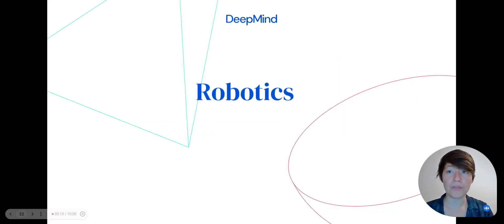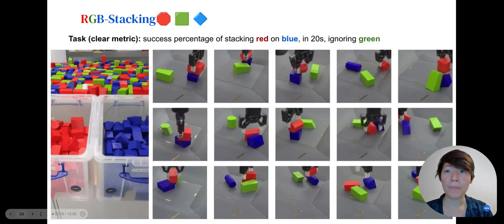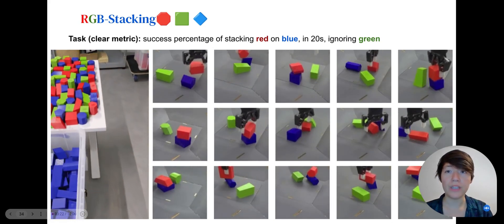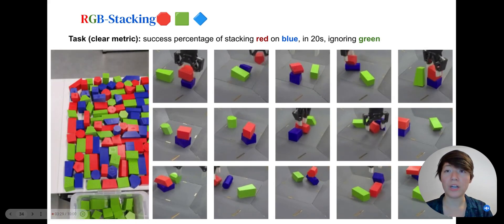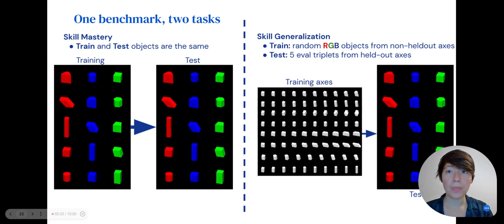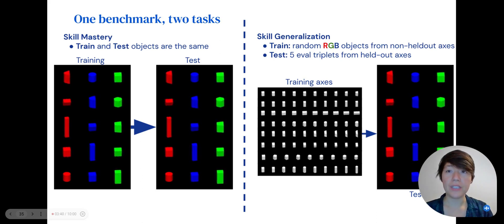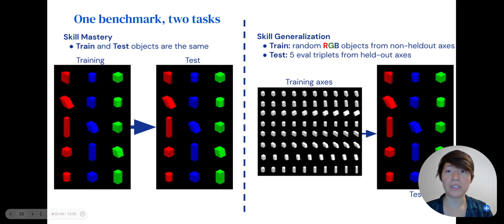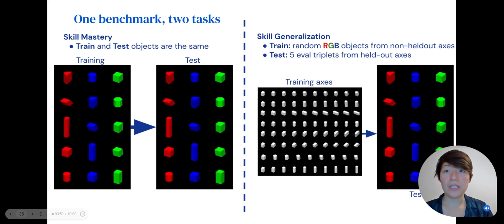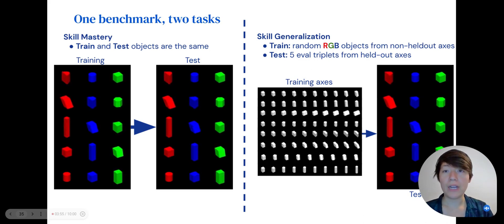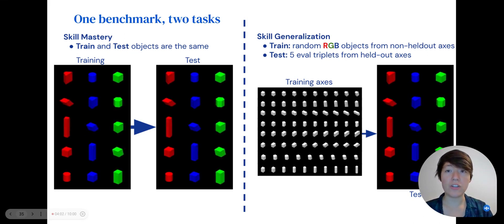Next, we'll show how Gato performs on real-world robotics tasks. We evaluated Gato on the RGB stacking robotics benchmark. The goal is to stack the red object on top of the blue one in the presence of a distractor green object. The object shapes vary such that some objects are much harder to grasp than others for the robot's parallel gripper. There are two tasks in this benchmark: skill mastery and skill generalization. Skill mastery is an in-distribution test. The training set of objects is the same as the test set, which is a limited set of five object triplets. Skill generalization is an out-of-distribution test. The robot is trained on a wide variety of object shapes that does not include the test set triplets, and here the test set is the same as the skill mastery train and test set.